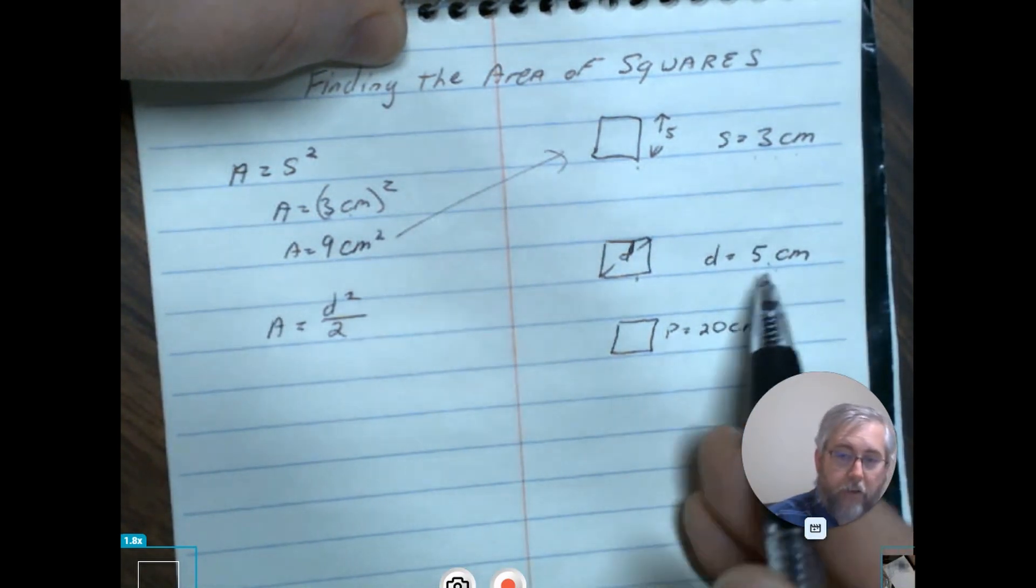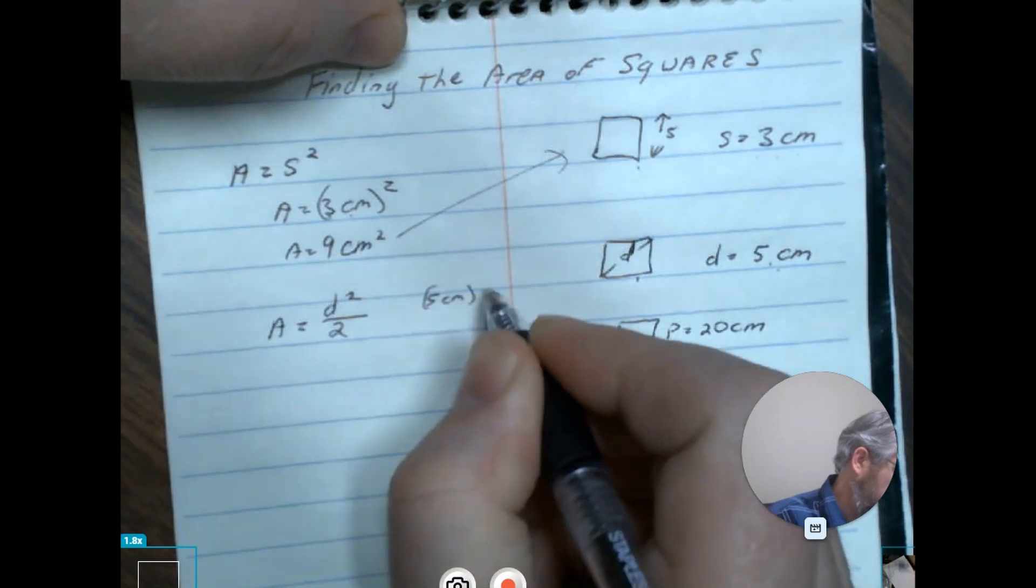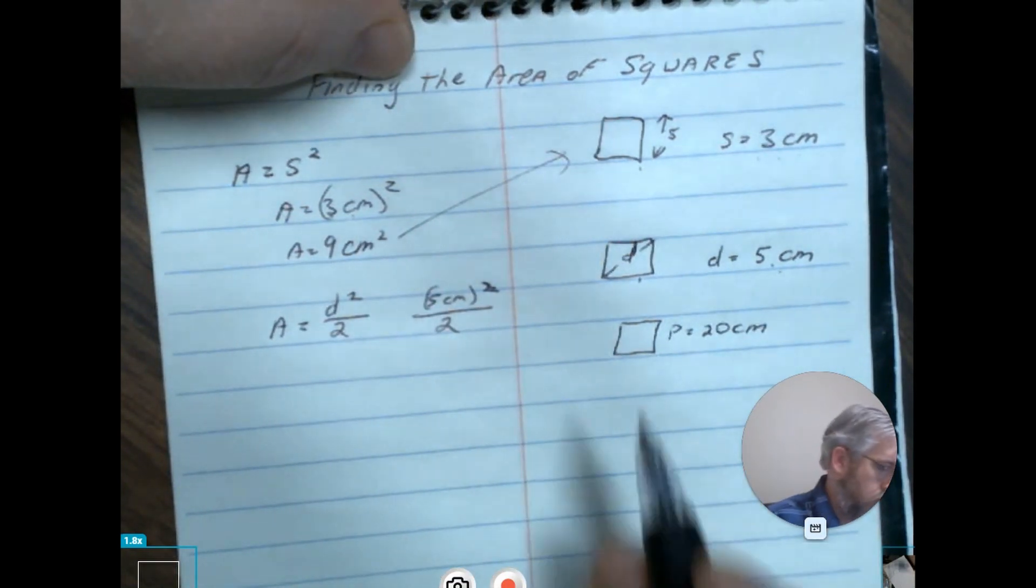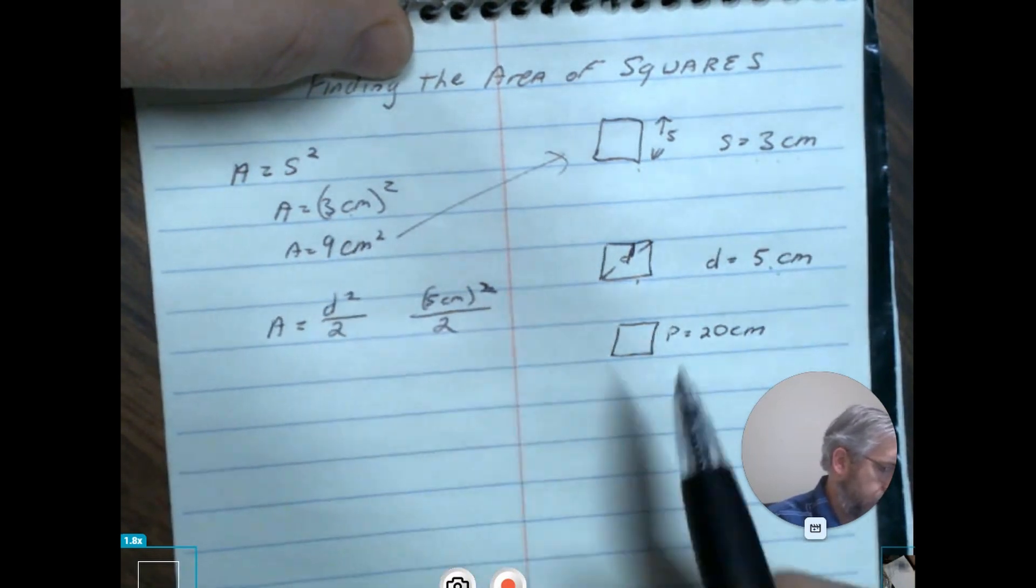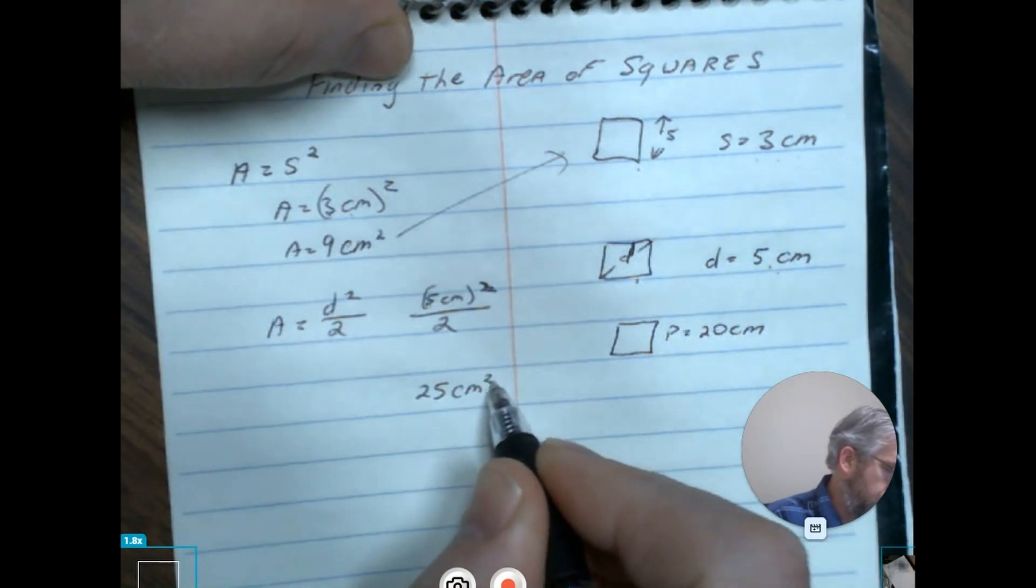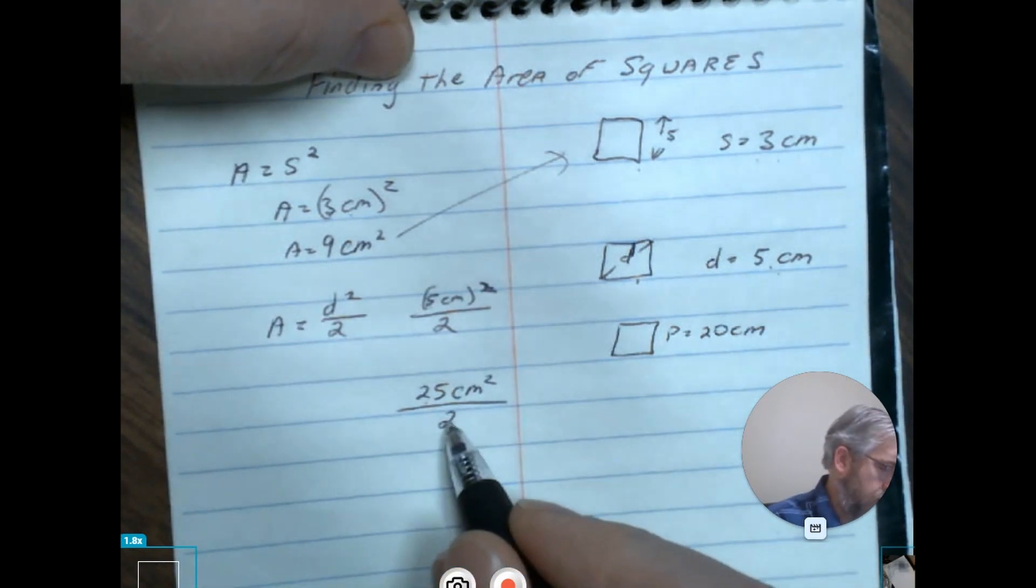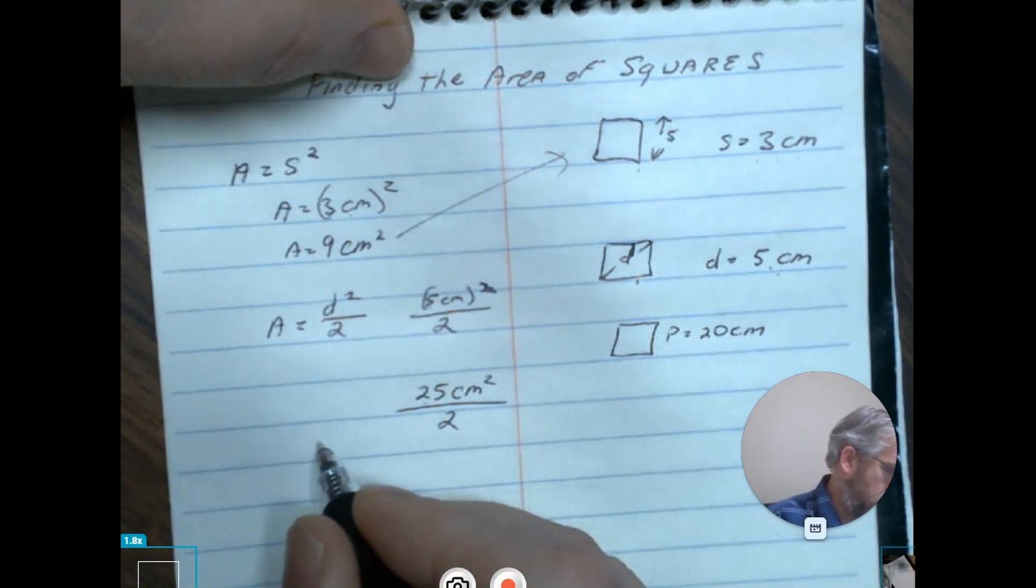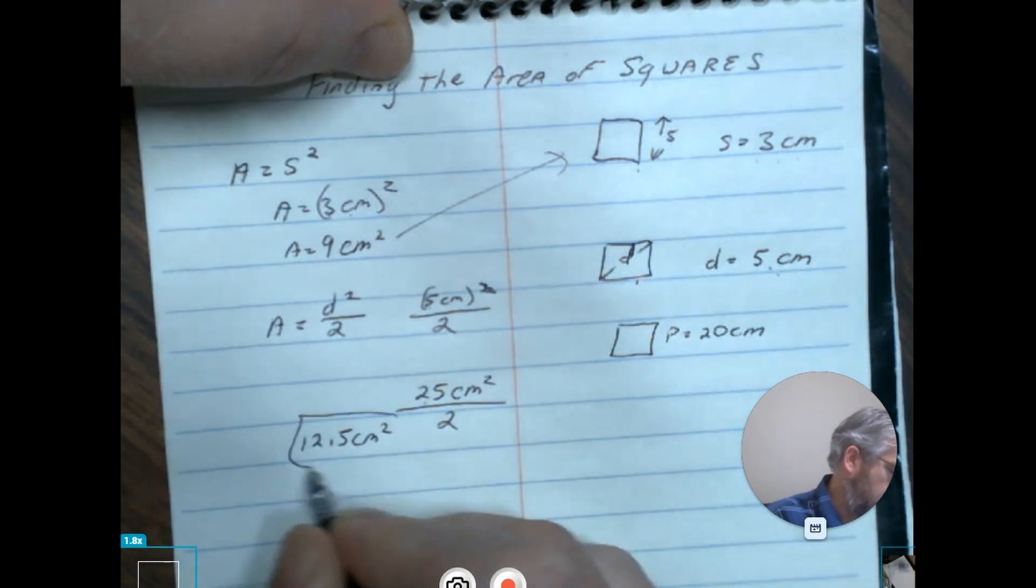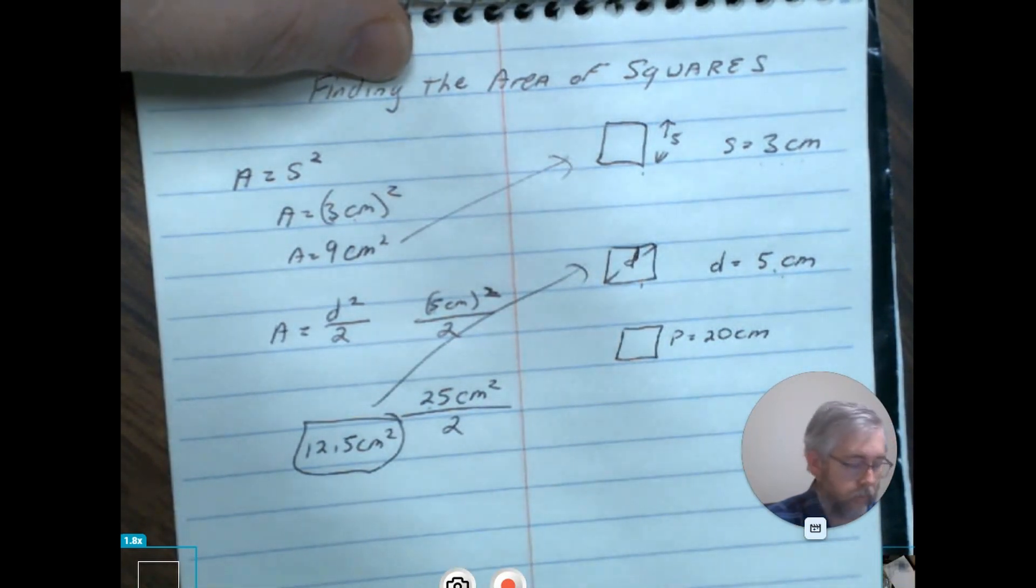Here it's going to be five centimeters squared over two. Again, similar as before, five times five is going to be 25, and centimeters times centimeters is going to be centimeter squared. We still have to divide it by two, so 25 divided by two is going to give us 12.5 centimeters squared. That's going to be our second answer as far as the area is concerned.